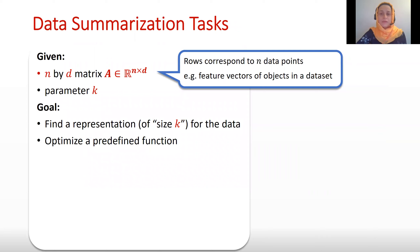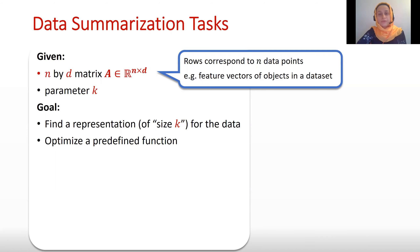Adaptive sampling is used for many data summarization tasks. To define them, let's define a framework. Suppose we are given a matrix A that is n by d, so the n rows correspond to n objects in the data set — each row could be a feature vector of an object in a large data set. Given a small parameter k, the goal is to find a small representation of this data of size k such that it optimizes some predefined function.